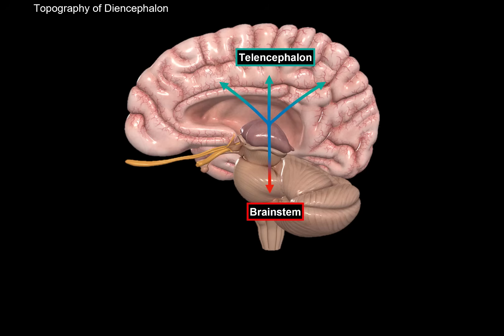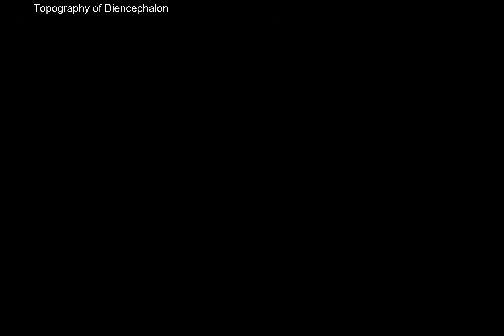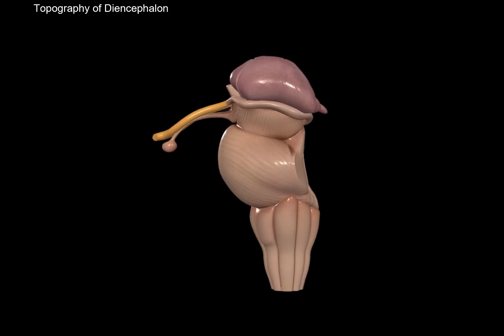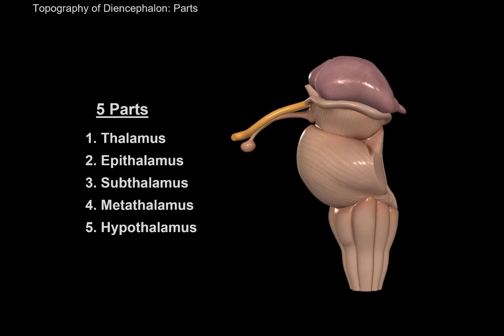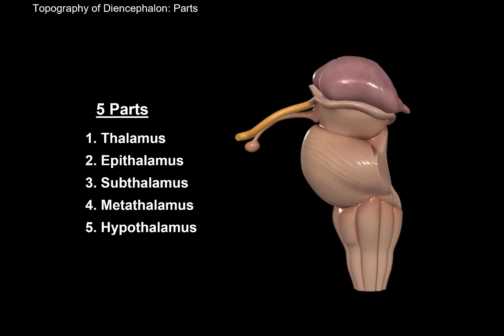It's like a post office of our brain, directing signals to the right place. The diencephalon consists of 5 parts: the thalamus, epithalamus, subthalamus, metathalamus, and hypothalamus.